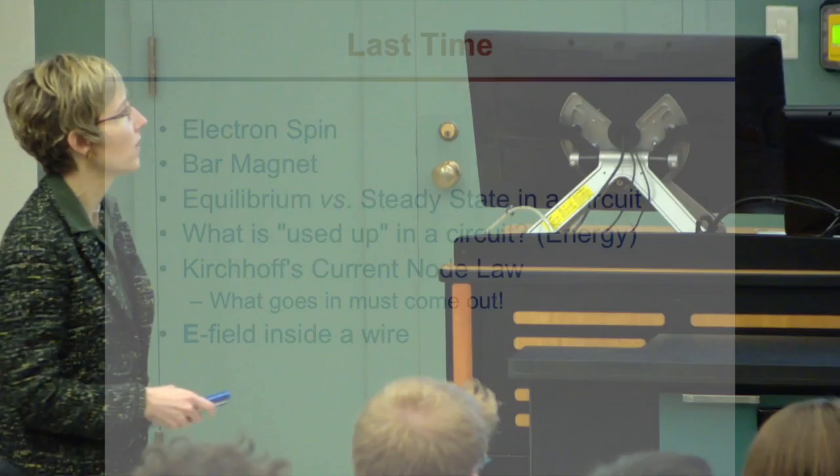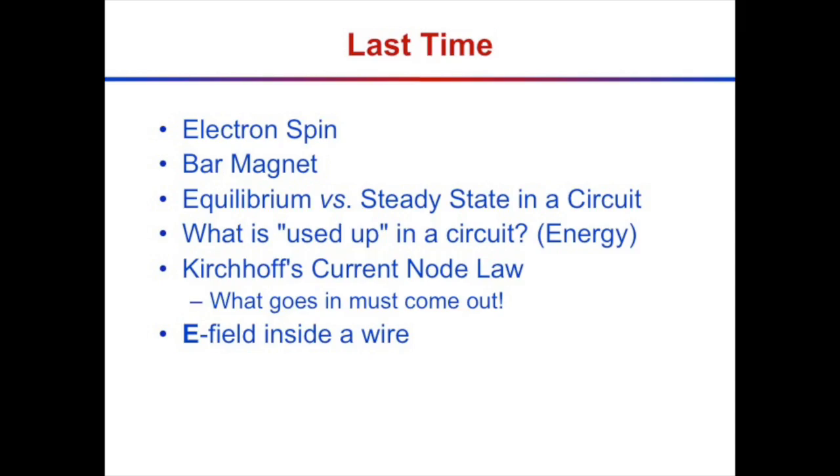We'll see today that transient effects precede the steady state. Last time we talked about electron spin and how electron spin plays into a permanent magnet.